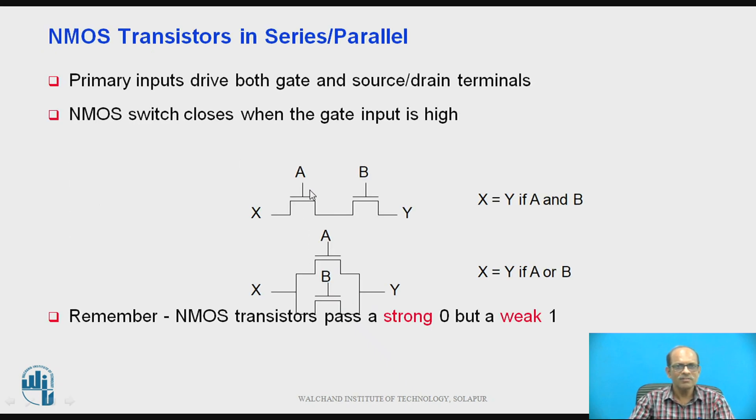Now NMOS transistors can be connected in series and parallel. So here two NMOS are connected in series and the primary inputs are applied to the gate and source or drain as shown in figure. So X is equal to Y if A and B, means this link will conduct if A and B both equal to 1.